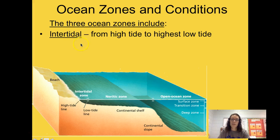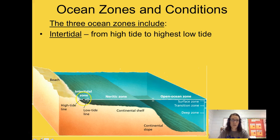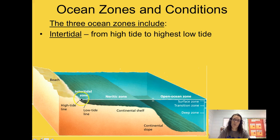The intertidal zone runs from the highest high tide to the lowest low tide. This picture shows a beach — this is where the tides come in on the shore. If you've ever been to the beach, there's a time of high tide and a time of low tide, and you can sometimes see where the tide had been when you walk along the beach.